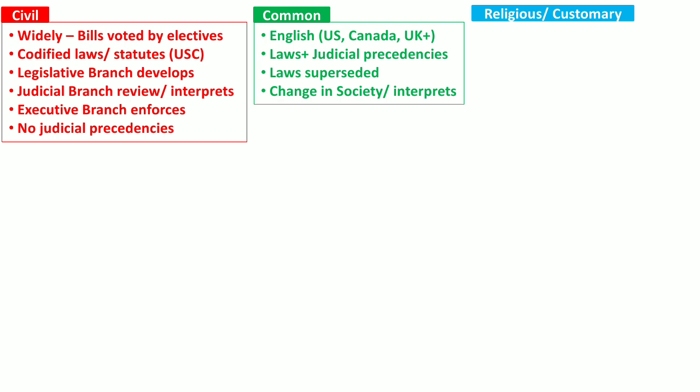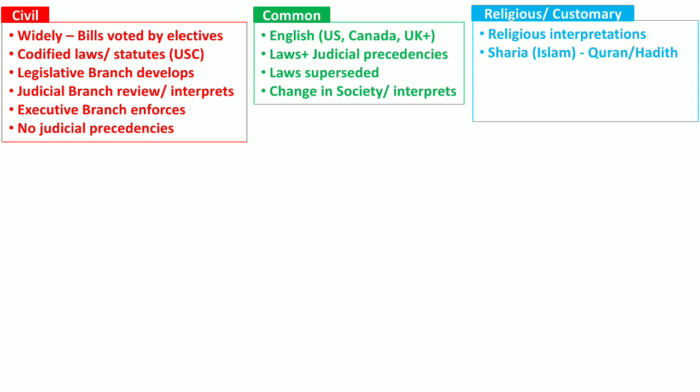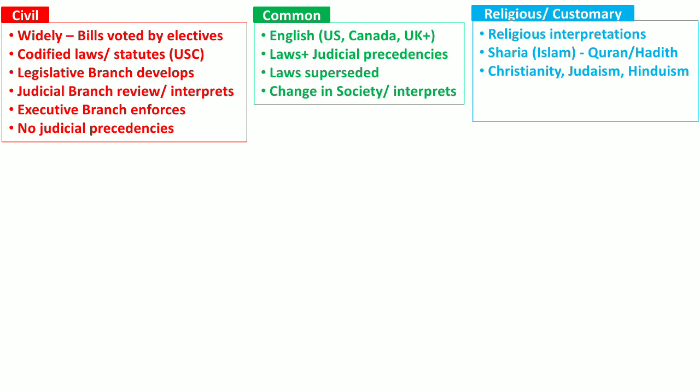The third legal system is the religious legal system or the customary legal system. In the religious legal system, religious interpretations carry much weight. The Sharia law, which is based upon the Quran and Hadith, is an Islamic law most widely used in Islamic countries. Christianity, Judaism, and Hinduism also have their influences over religious laws. Customary laws are common practices accepted in a group to the extent that they are interpreted as laws, and they may later be codified as laws by passing a bill through the electives.